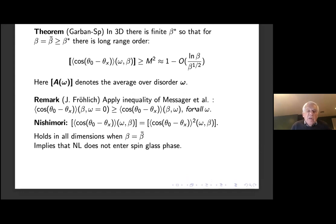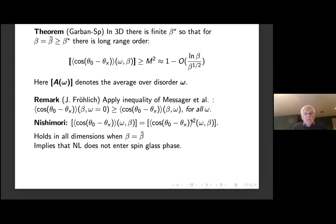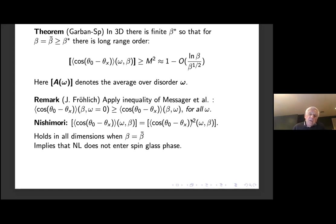The other remarkable identity due to Nishimori — it works here just as well as in the Ising case — says that if I look at the spin-spin correlation at any distance, any temperature, on the Nishimori line, it's equal to the same expression with a square. When I first saw this identity I thought it couldn't be quite right, but it is an identity valid for all values of beta. It is an indication that along the Nishimori line there's no Edwards-Anderson parameter being activated, so you would never enter the spin-glass phase.